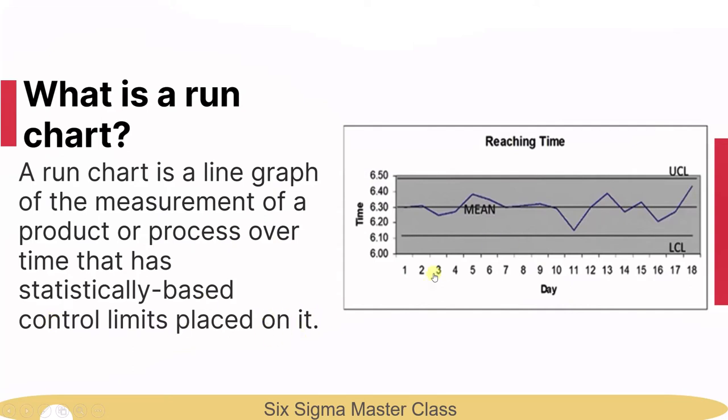In simple terms, a run chart is a line chart that visually displays data over a period of time. The run chart helps us to see process performance over time.